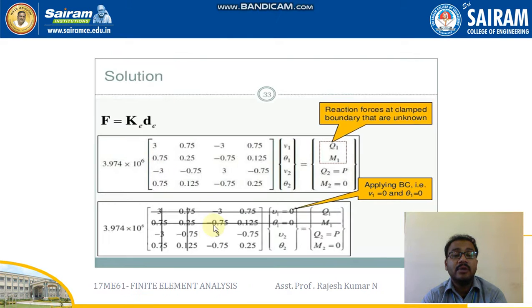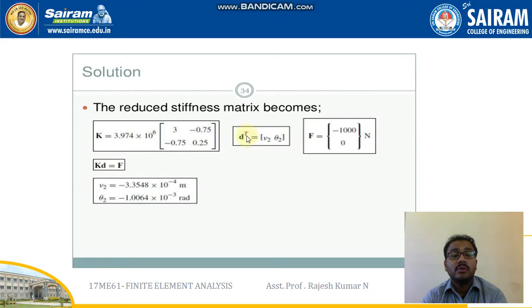If moment value is given, write that value. If not given, write as 0 for solving sake. The reduced stiffness matrix becomes, after eliminating the previous things, what will be left out: 3.974 into 10 power 6, 3 minus 0.75, minus 0.75, 0.25, v2 theta 2, and p value.